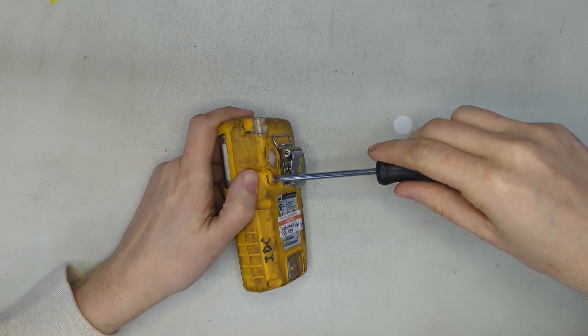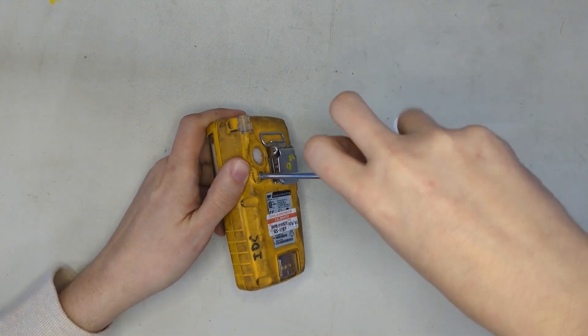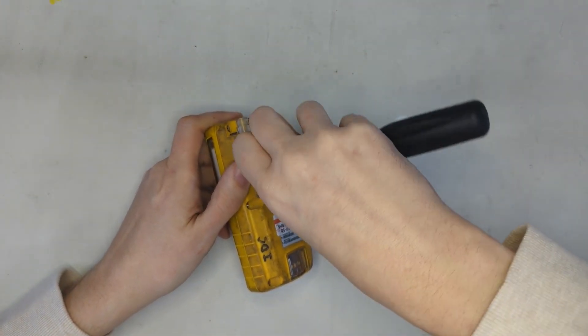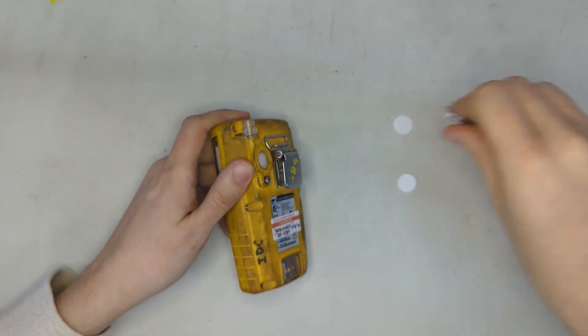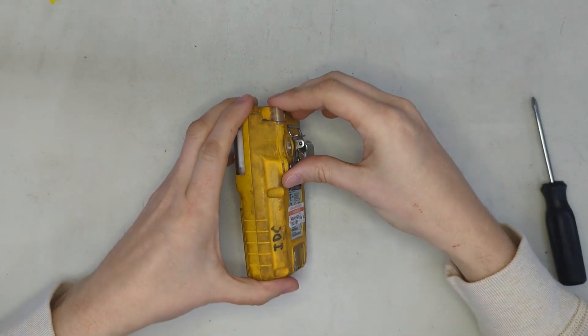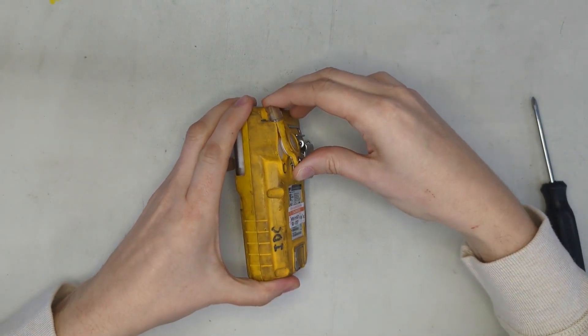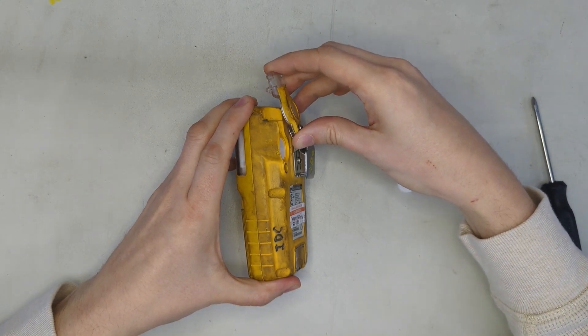So first things first, unscrew this here. This is the inlet adapter, and we're going to unscrew this and then the way you remove it is by rocking it forward and then pulling it straight out that way. Just like that.